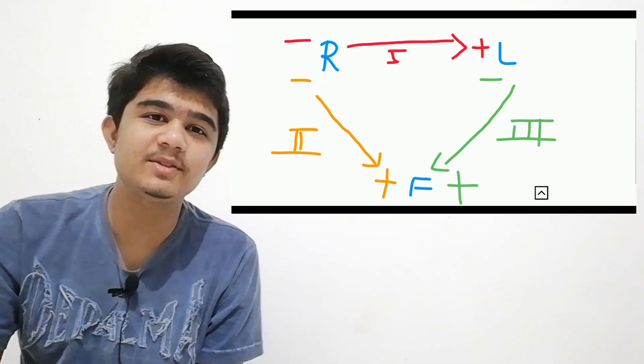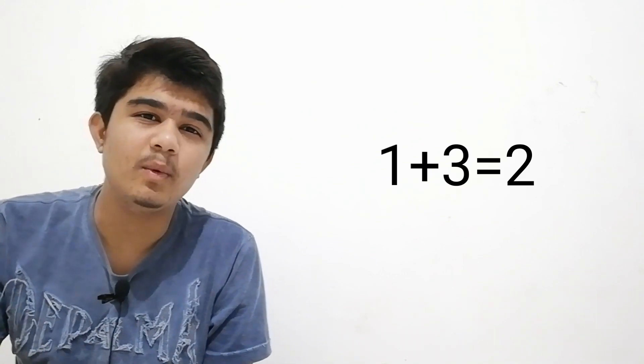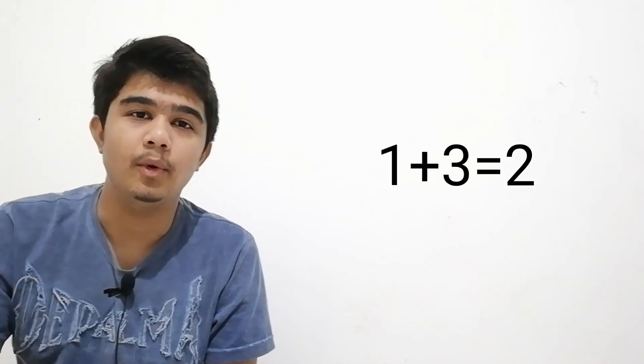Now this triangle is called the Einthoven's triangle. One important thing is that lead 3 plus lead 1 equals lead 2.